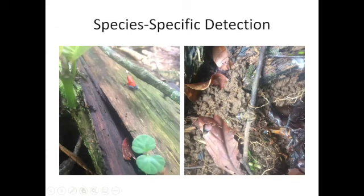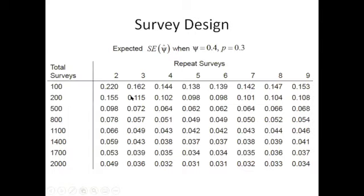Species-specific detection probabilities vary enormously. A poison dart frog is very easy to see, while a leaf-litter frog is very hard to detect. You must remember that different species have very different probabilities of detection. For example, when psi is 0.4 and detection probability is 0.3, a precision chart shows how many repeated surveys are needed to achieve strong inference based on estimated standard errors.